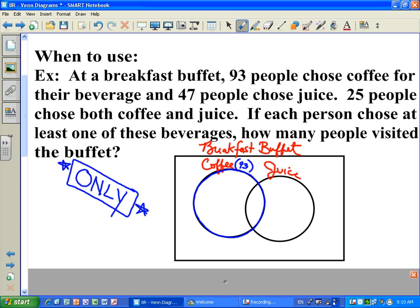Same thing with the 47 people choosing juice. It doesn't say 47 people only chose juice. It says 47 people total chose juice, so you have to assume it means total. So we'll put 47 there, and that circle would represent the juice.